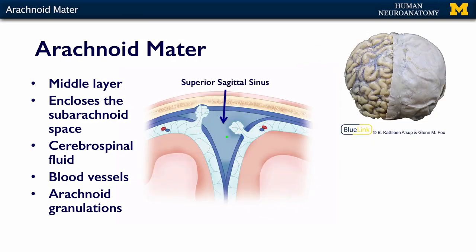So in this image, we see the dura and the arachnoid in these regions here, and we see the arachnoid granulations. The arachnoid granulations are also here.